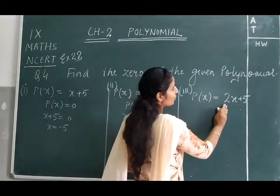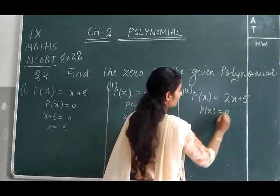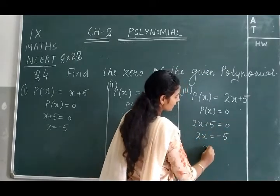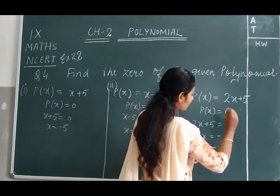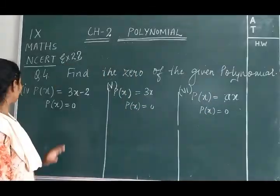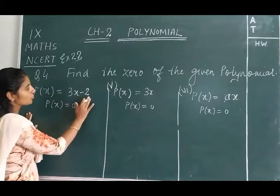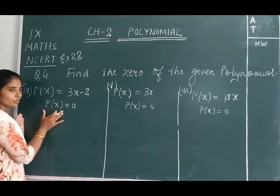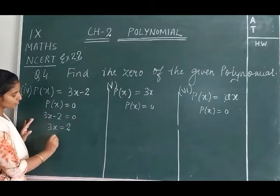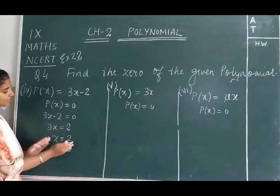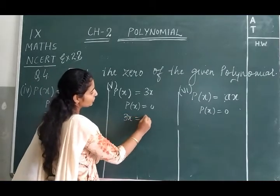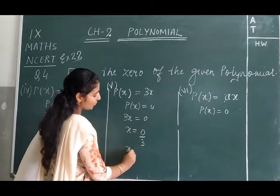For the third part, p(x) = 2x + 5: setting 2x + 5 = 0 gives 2x = -5, so x = -5/2 is the zero. For the fourth part, p(x) = 3x: setting 3x = 0 gives x = 0/3, therefore x = 0 is the zero of the given polynomial.